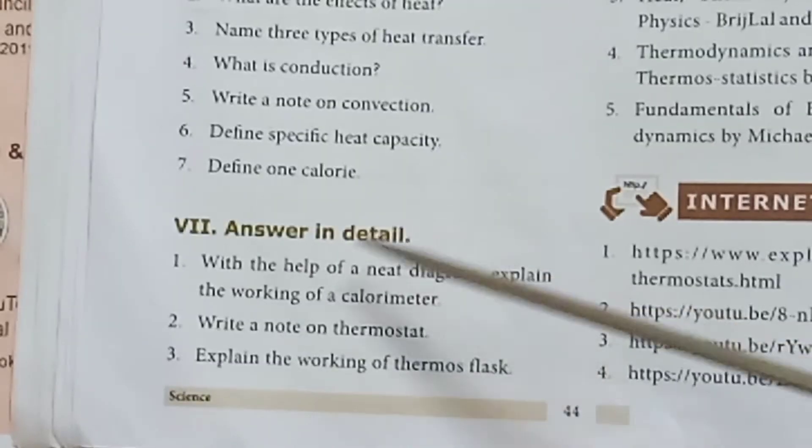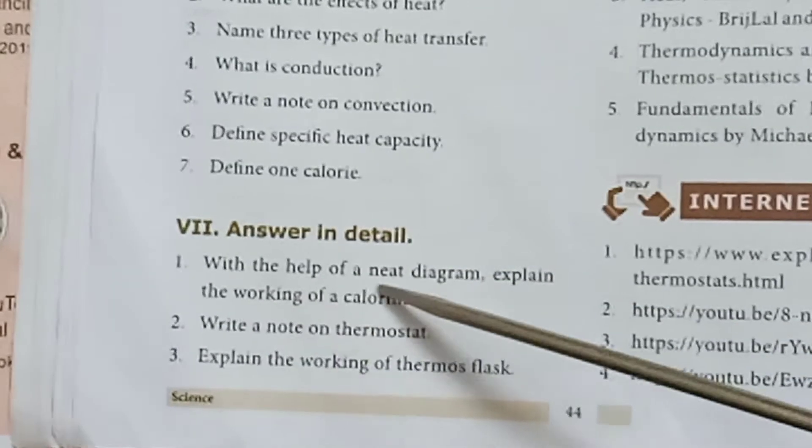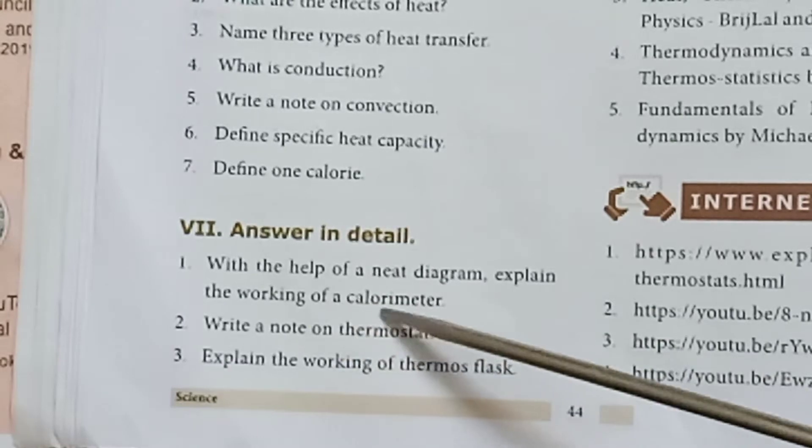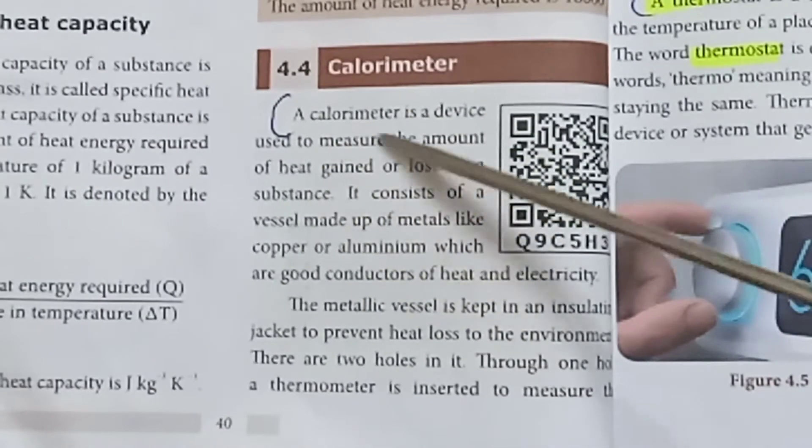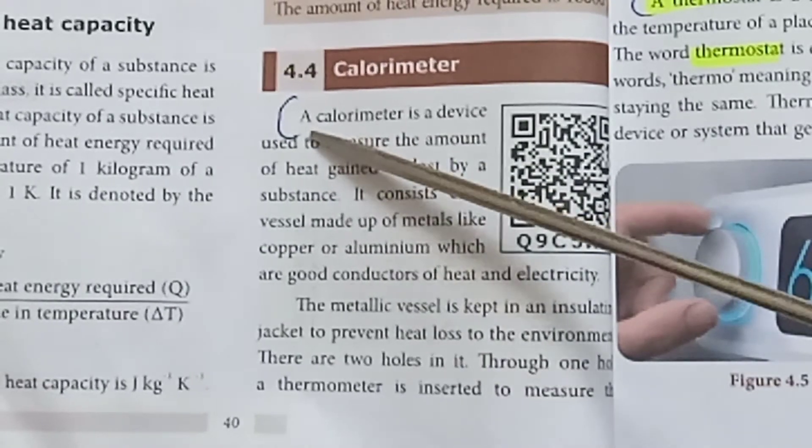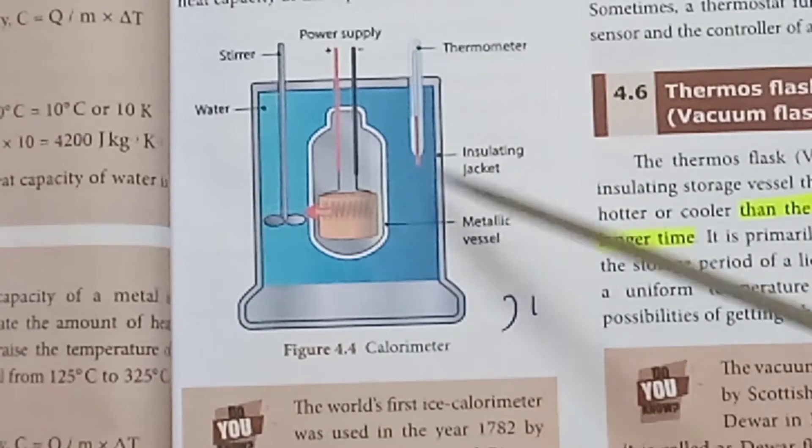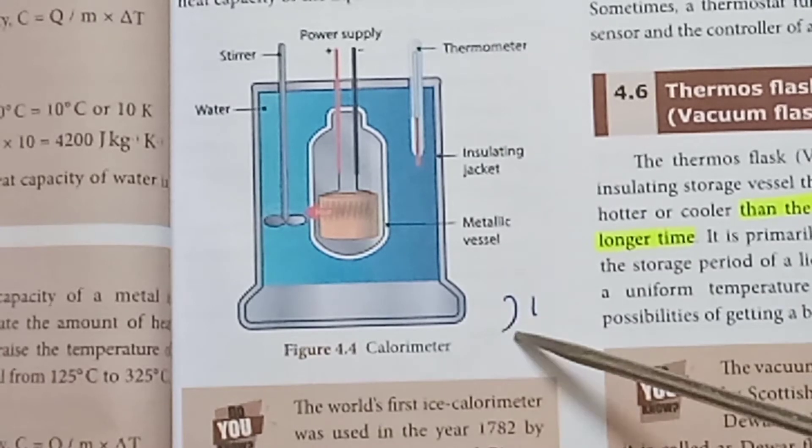Number 7: Answer in detail. First one: With the help of a neat diagram explain the working of a calorimeter. Calorimeter, page number 40: Calorimeter is the device used to measure heat capacity.